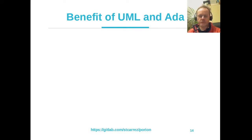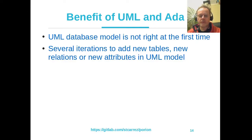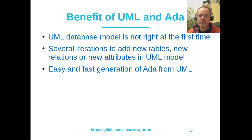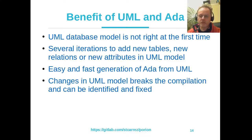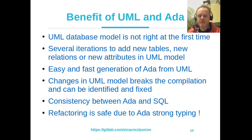Let's look at the benefits of using UML. When I started the project I didn't get the database model right the first time — I made several iterations, adding new tables, relations, and attributes, and when things got too complex I moved tables into other packages. Code generation is fast and it's easy to change the UML model and rebuild the ADA code. A change in the UML model can break compilation, but you detect issues quickly and just fix them. It also keeps consistency between the generated ADA code and the SQL database. Refactoring in ADA is safe, and when it compiles again you can be confident it will work.